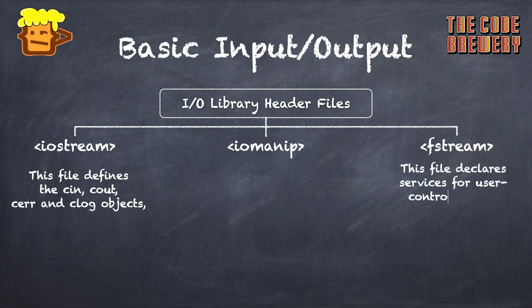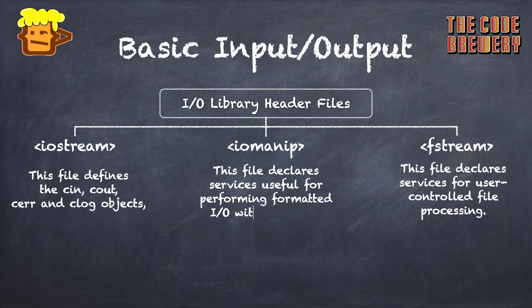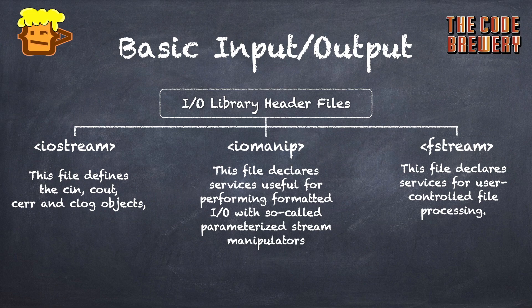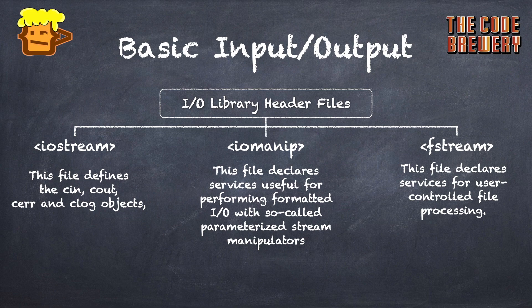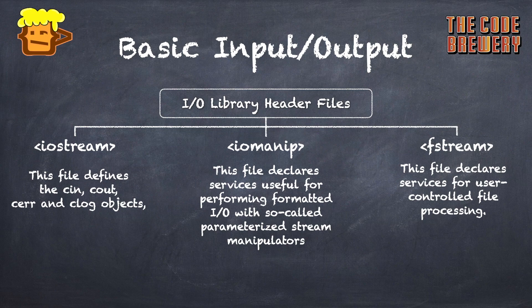Iomanip declares services useful for performing formatted input/output with parameterized stream manipulators. Fstream declares services for user-controlled file processing.